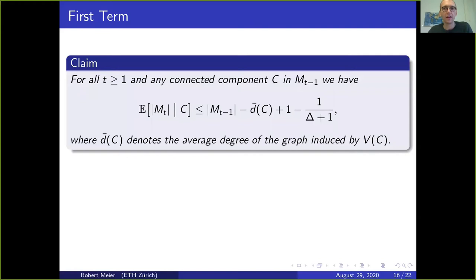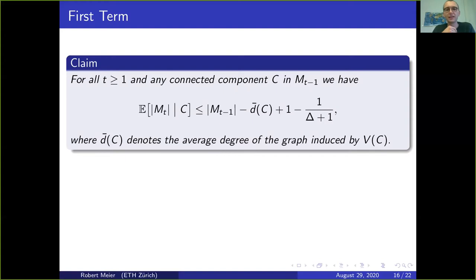Now we turn to constructing the potential function. A very natural choice is to count the number of monochromatic edges: if there are none, we are at zero, so the target is correctly placed. The question is whether we get a strong enough drift—does the number of monochromatic edges decrease to zero fast enough in expectation?